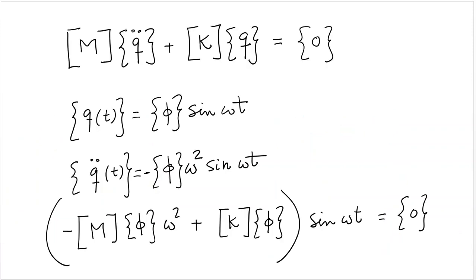Okay. So, let's start with the equation of motion for a multi-degree of freedom system with no damping. You would start with something like this. The mass matrix times the vector of accelerations plus the stiffness matrix times the displacement vector equal to zero. So, we're in a case of free vibration, no forcing term on the right-hand side.